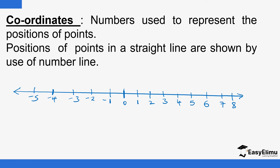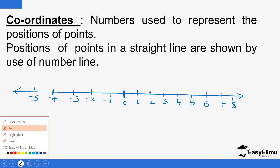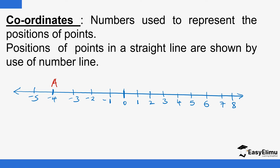So if you have a number of points which are in a straight line, then you could describe their positions on this number line. For example, with two or three points — point A, B, and C — the position of point A can be described as negative four, B is at two, and C is at seven.